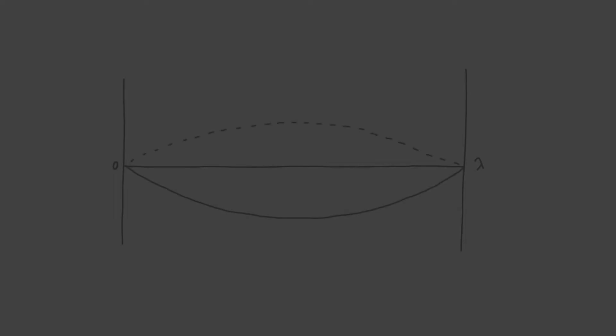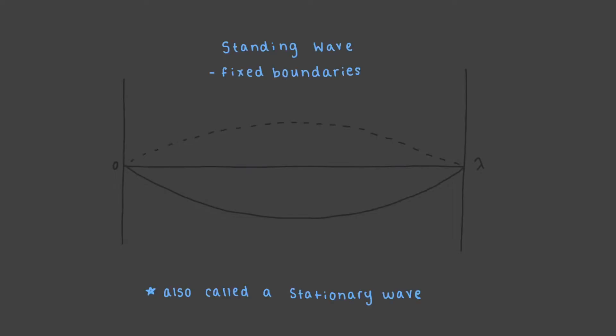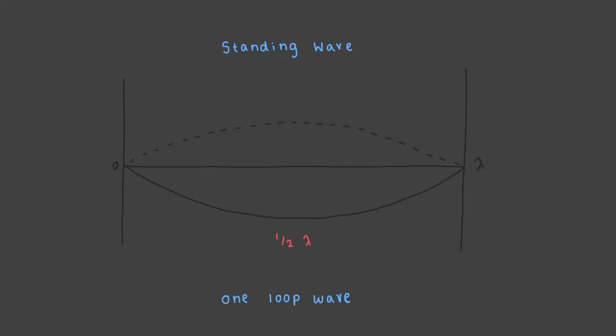Before we look at the complicated three-dimensional waves that describe electrons, let's look at an easier-to-picture one-dimensional standing wave. A standing wave, also called a stationary wave, is a wave with fixed boundaries with zero at the edges. This is a wave with one loop, meaning only one half of a wavelength. We'll use loops to refer to half wavelengths.